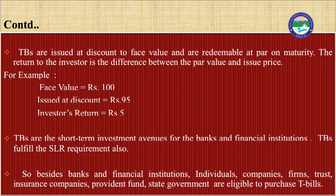Treasury bills are issued at a discount to face value and are redeemable at par on maturity. The return to the investor is the difference between the par value and the issue price. For example, if a 91-day treasury bill is issued at a discounted value of rupees 95 and its face value is 100, at maturity the investor will get rupees 100, and the difference of rupees 5 is the investor's return. Treasury bills are short-term investment avenues for banks and financial institutions and also fulfill the SLR requirement.